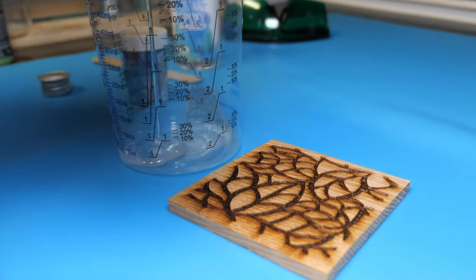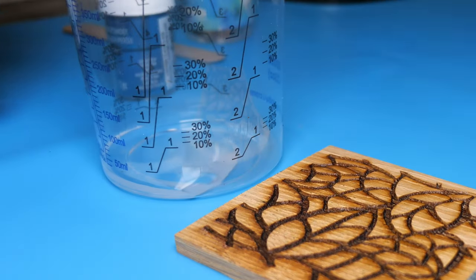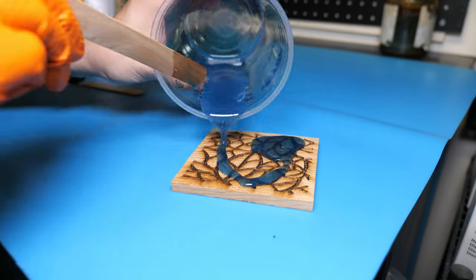You could add a branded logo to the underside very easily just by flipping it over and then engraving both sides of the piece.